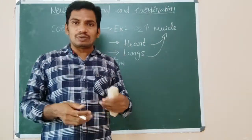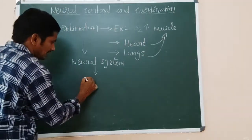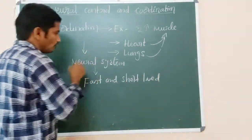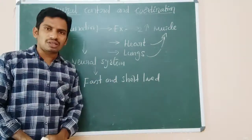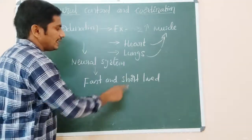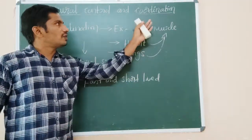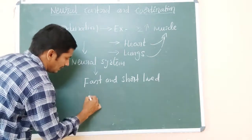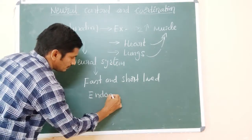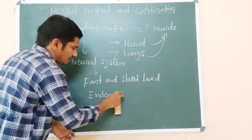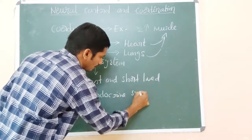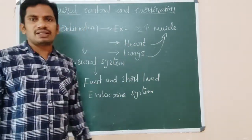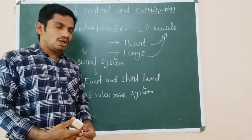This coordination is brought by the neural system, which can coordinate both internal and external functions. However, this neural integration is fast and short-lived. That is the reason we need one more system to control different organs and bring further coordination — and for that we have the endocrine system, which regulates the rest of the functions along with the neural system.